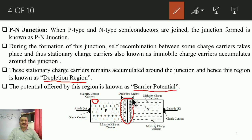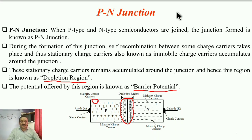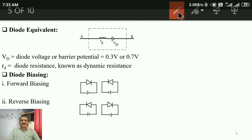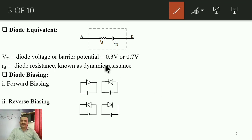The barrier potential acts like a wall — it will not allow the remaining charge carriers to recombine with each other. This wall has its own strength: either 0.3 V or 0.7 V, depending on the material used. If the material is germanium, the barrier potential is 0.3 V; if it is silicon, the barrier potential is 0.7 V.